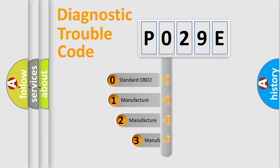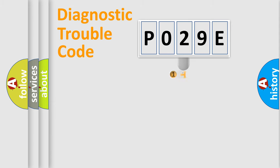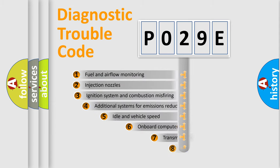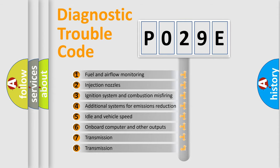If the second character is expressed as zero, it is a standardized error. In the case of numbers 1, 2, 3, it is a manufacturer-specific error. The third character specifies a subset of errors.